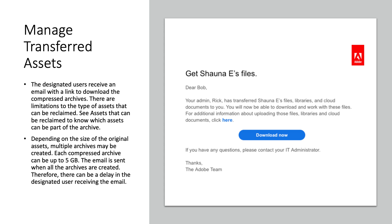Once the designated users receive an email with a link to download the compressed archives, there are limitations to the type of assets that can be reclaimed. See 'Assets that can be reclaimed' to know which assets can be part of the archive. Depending on the size of the original assets, multiple archives may be created. Each compressed archive can be up to 5GB. The email is sent when all the archives are created, so there can be a delay in the designated user receiving the email.